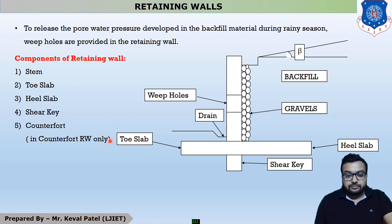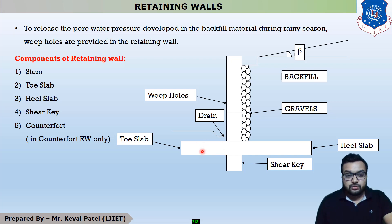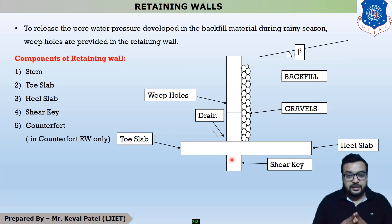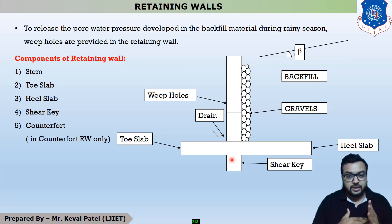This whole portion is called the base slab, in which this portion is called the toe slab and this portion is called the heel slab. This portion is called the shear key. The shear key is provided to retain the retaining wall against sliding.